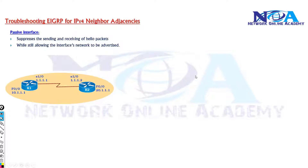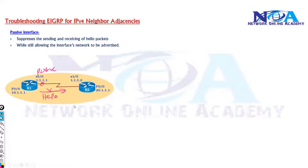The next possible issue for EIGRP neighborship not establishing can be the passive interface command. You may remember from the route filtering sections we already covered some details about passive interface. Basically, what passive interface will do is if I enable it, it is not going to send any hello messages, disabling hello messages on that specific interface.